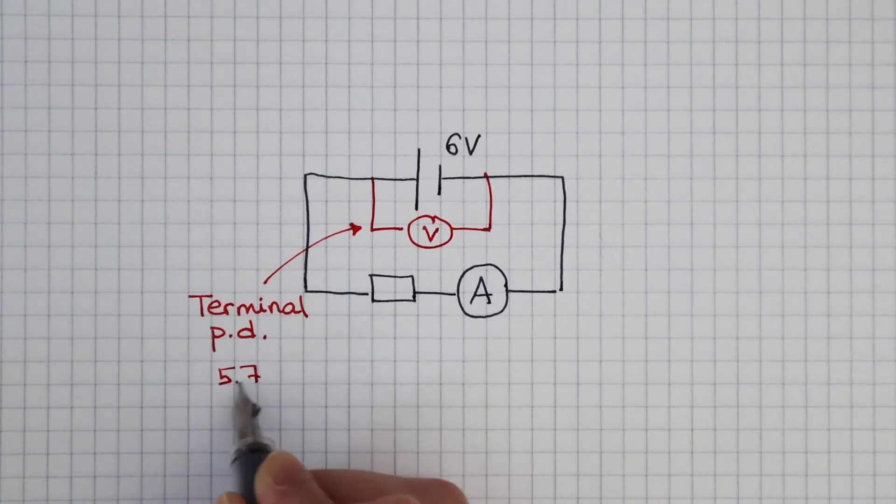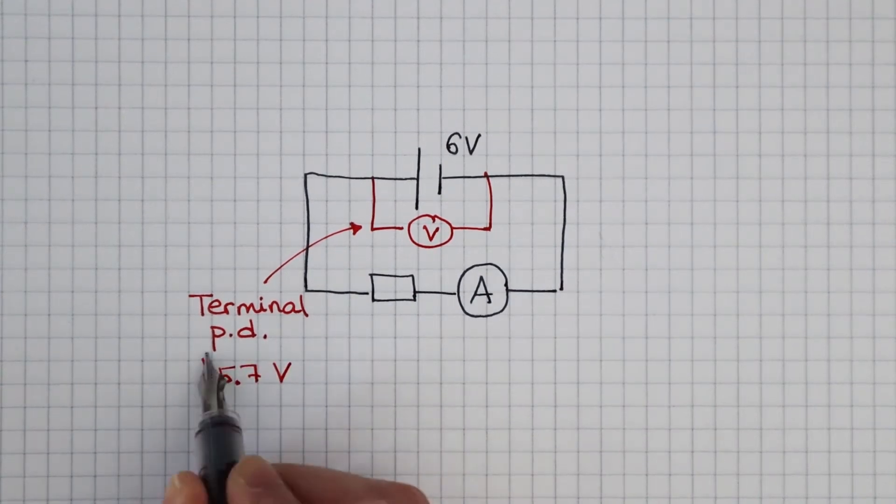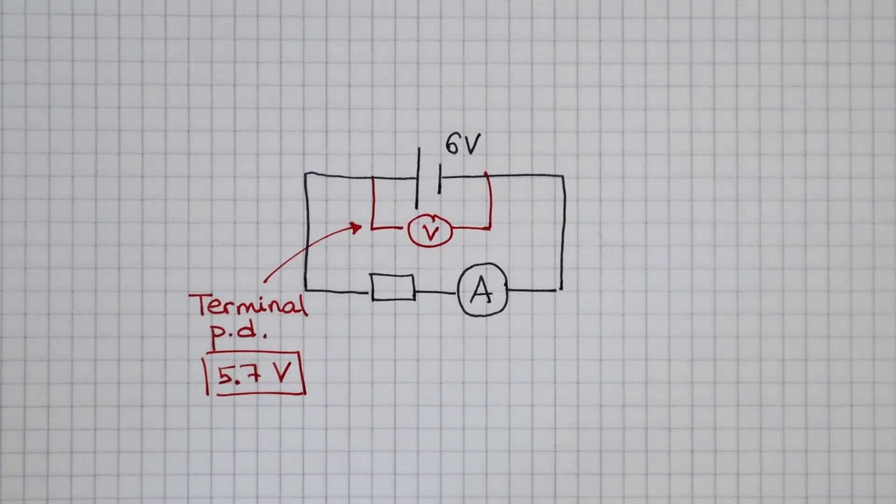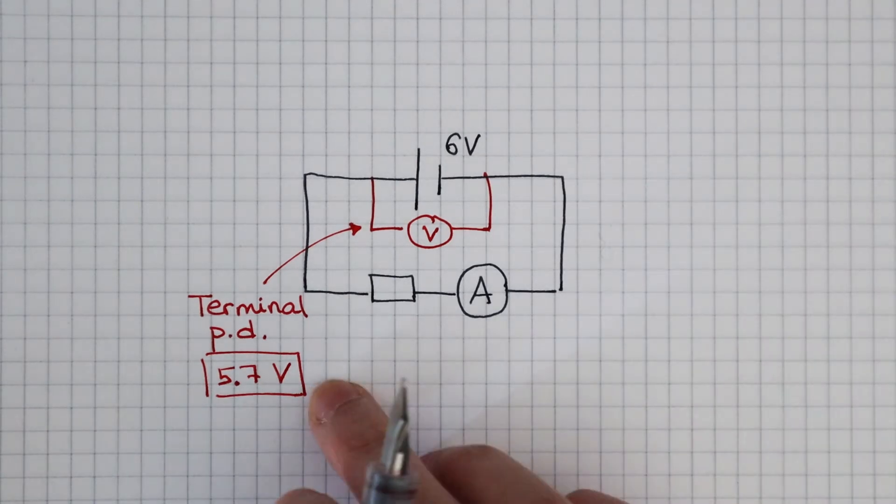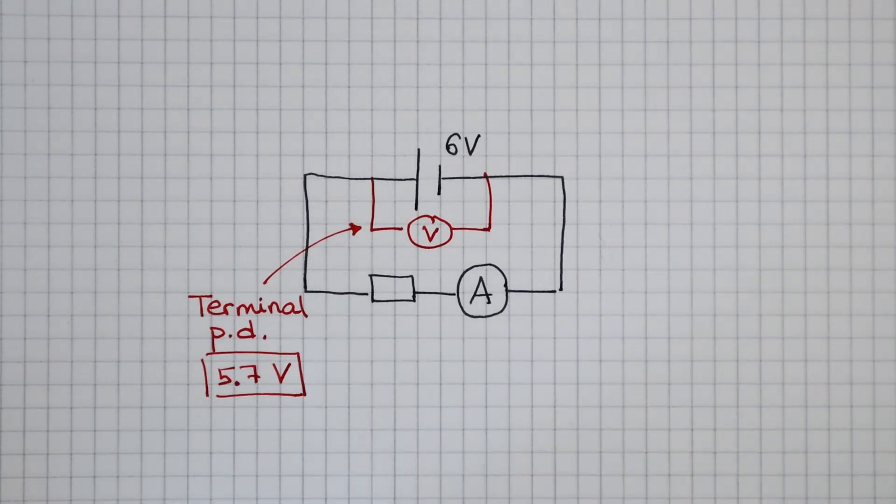What you might find strange is that if you set up the circuit, the voltmeter might read maybe 5.7 volts. Why is the terminal PD lower than the available 6 volts of the cell?